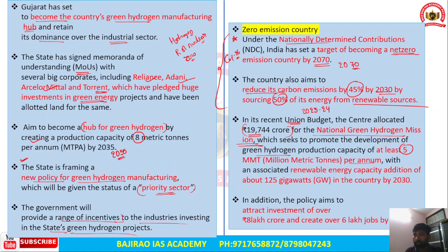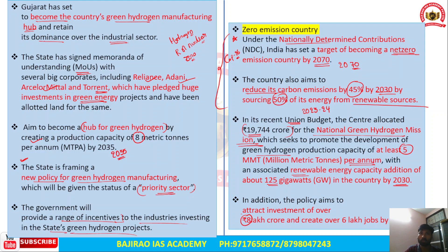The Union Budget 2023-24 allocated around ₹19,744 crore for the National Green Hydrogen Mission. The mission seeks to promote development of green hydrogen production capacity of at least 5 million metric tons per annum. Along with this, the center has focused on increasing renewable energy capacity addition of 175 gigawatts by 2030. The policy also aims to attract investments of ₹8 lakh crore and create 6 lakh jobs by 2030.